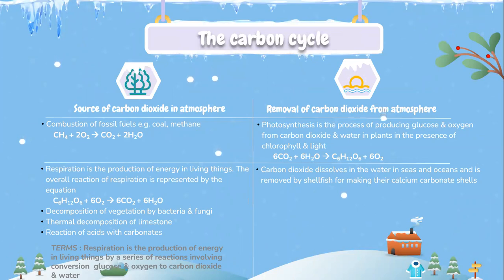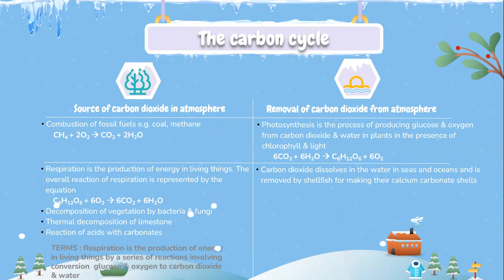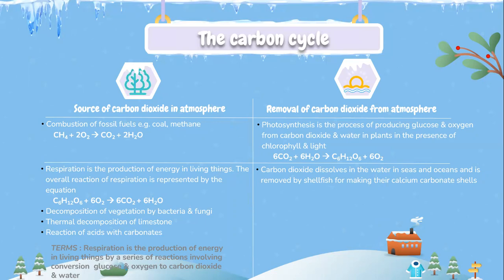Let's look into the carbon cycle. Sources of carbon dioxide in the atmosphere include combustion of fossil fuels — for example, coal and methane: CH4 + 2O2 → CO2 + 2H2O. The overall reaction of respiration is represented by the equation: C6H12O6 + 6O2 → 6CO2 + 6H2O. Thirdly, carbon dioxide comes from the decomposition of vegetation by bacteria and fungi.